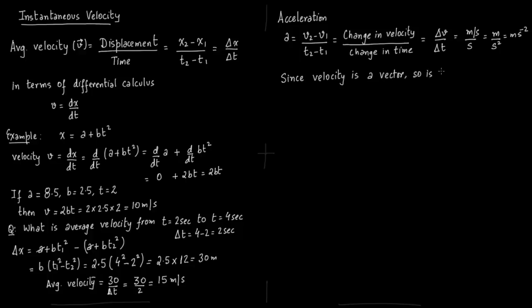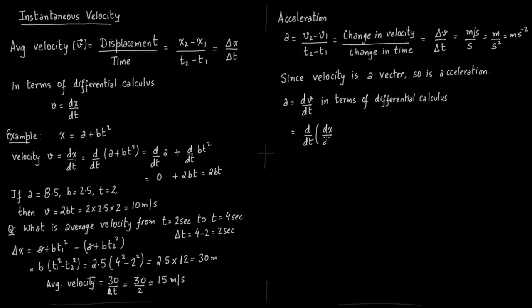Since velocity is a vector, acceleration is also a vector. We write acceleration in terms of differential calculus as a = dv/dt. Since v = dx/dt, we can rewrite this as d/dt of (dx/dt), which is a new definition for acceleration. You can also write it as d²x/dt² — this is just a new notation for d/dt of dx/dt.